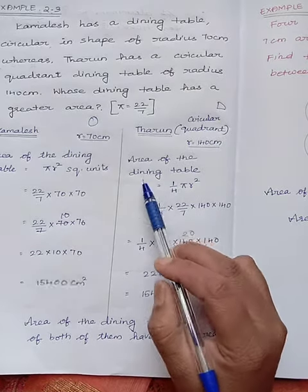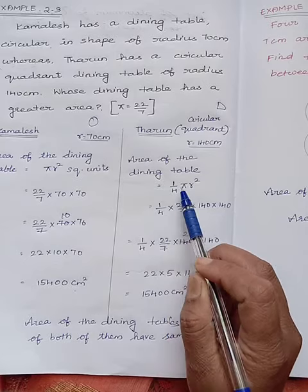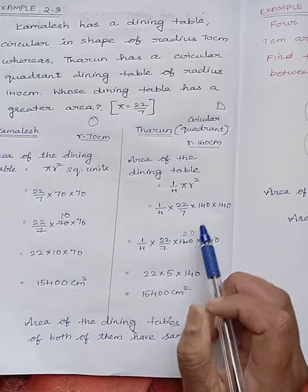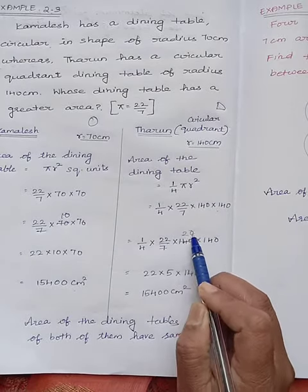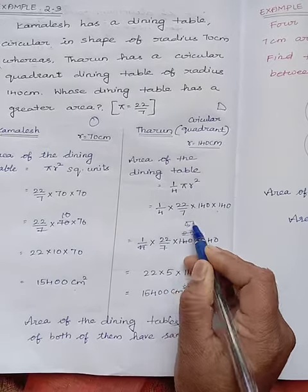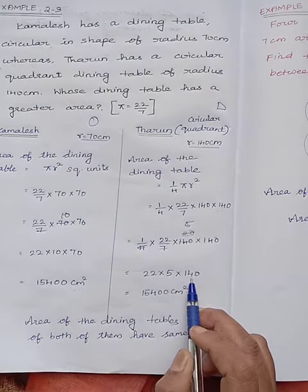We know that area of a dining table quadrant is 1/4 πr². 1/4 × π value 22/7 × radius value is 140 × 140. 7 divides 140, 20 times. 4 divides 20, 5 times.